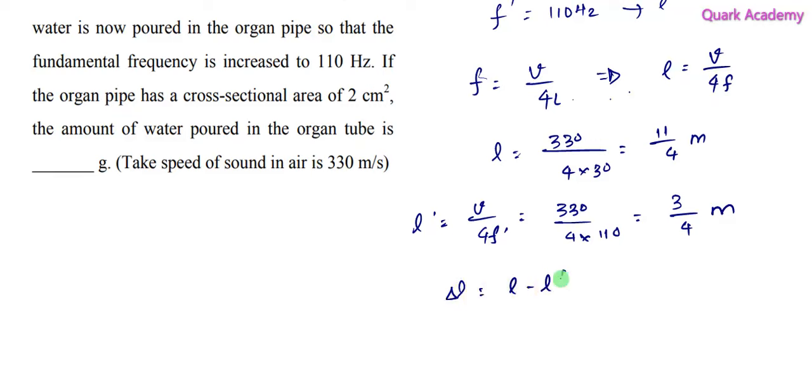Which is L minus L dash. So L is 11 by 4 and L dash is 3 by 4, so you will get 8 by 4. 8 by 4 is equal to 2 meters. So the change in length is 2 meter. Now this 2 meter length has changed because of water, so the length of water which we poured is 2 meter.